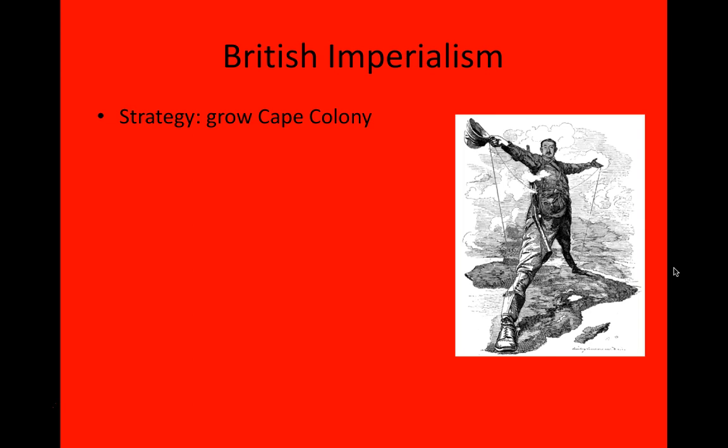Rhodes is an interesting personality. He alternated his time between England and South Africa. He was a student at the University of Oxford, though he didn't graduate until he was in his late 20s because he spent a lot of his time prospecting for diamonds and later for gold in South Africa. By 1881, around the time he graduated from Oxford, he became a member of Cape Parliament and became the Cape governor in 1890. Rhodes would go on to found with his massive fortune the Rhodes Scholarship, which is one of the most prestigious scholarships in the world, though he is a pretty polarizing figure.